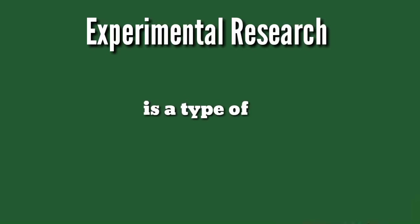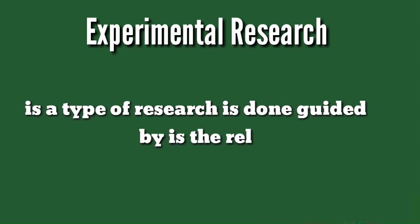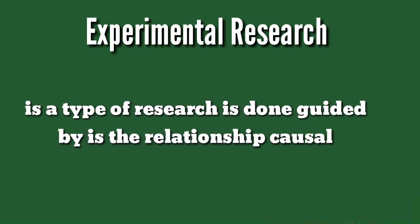The next under level of investigation is experimental research. This type of research is done guided by the question: is the relationship causal? You conduct research to find out if the relationship is causal — what causes the events to happen. For example of experimental research, in a classroom with eight rows, you divide the students into two groups: group 1 covers rows 1 through 4, and group 2 covers rows 5 through 8.